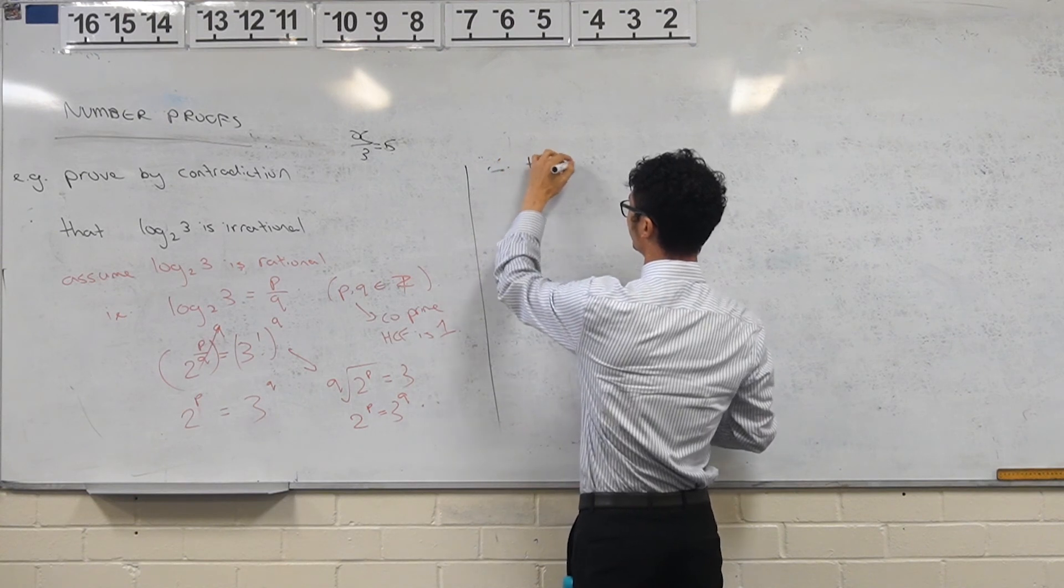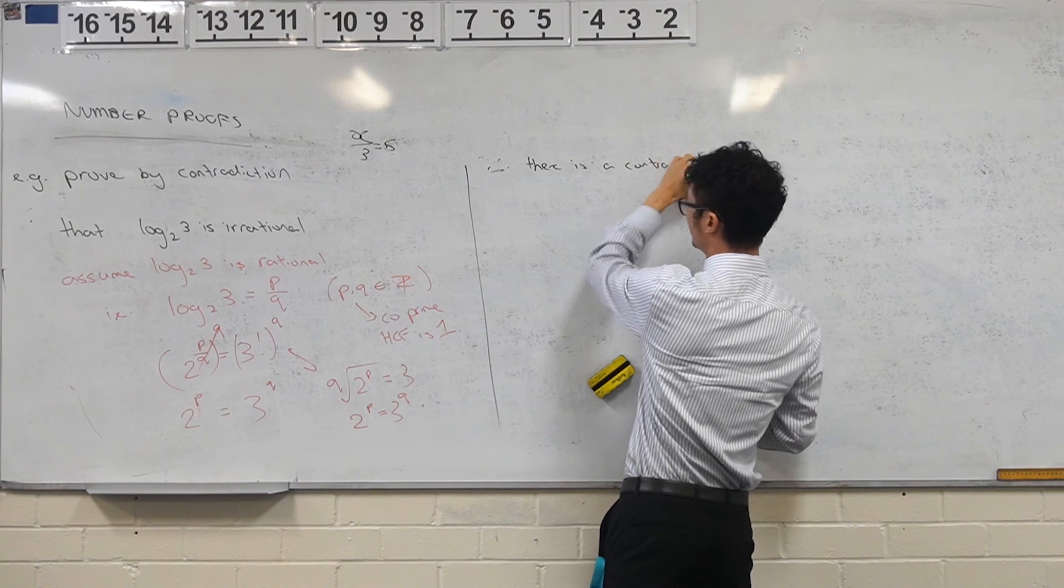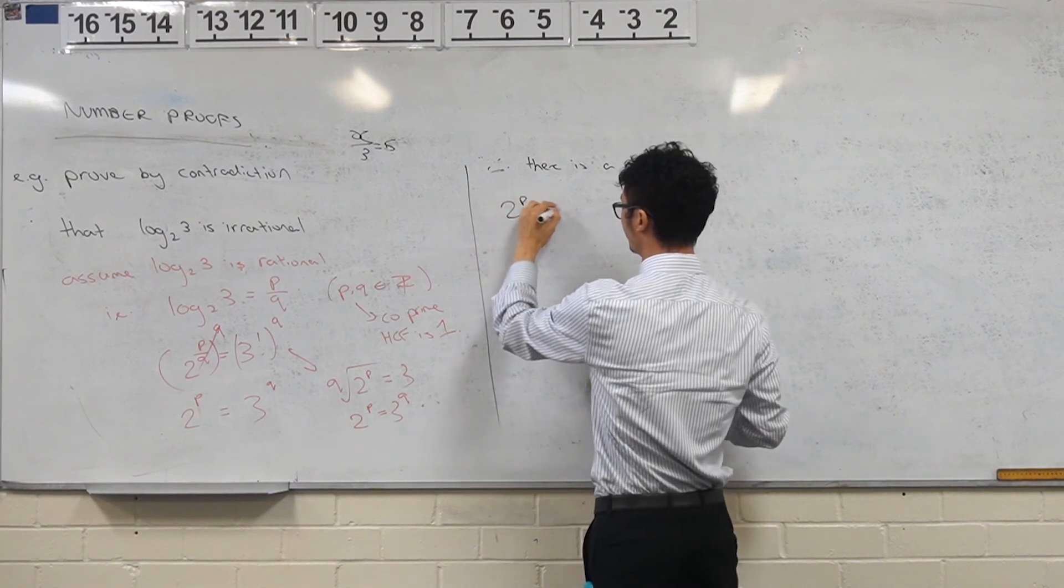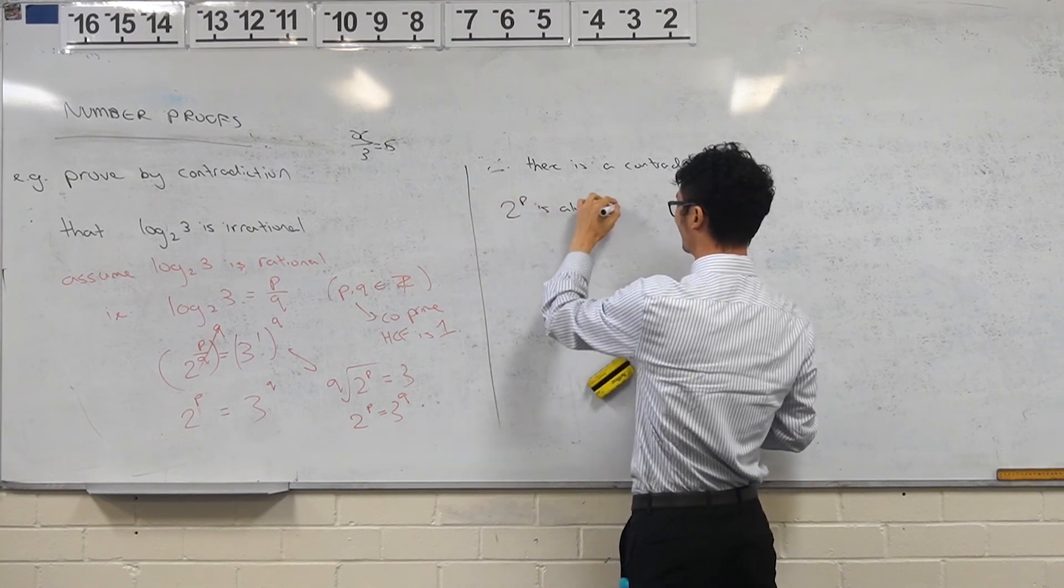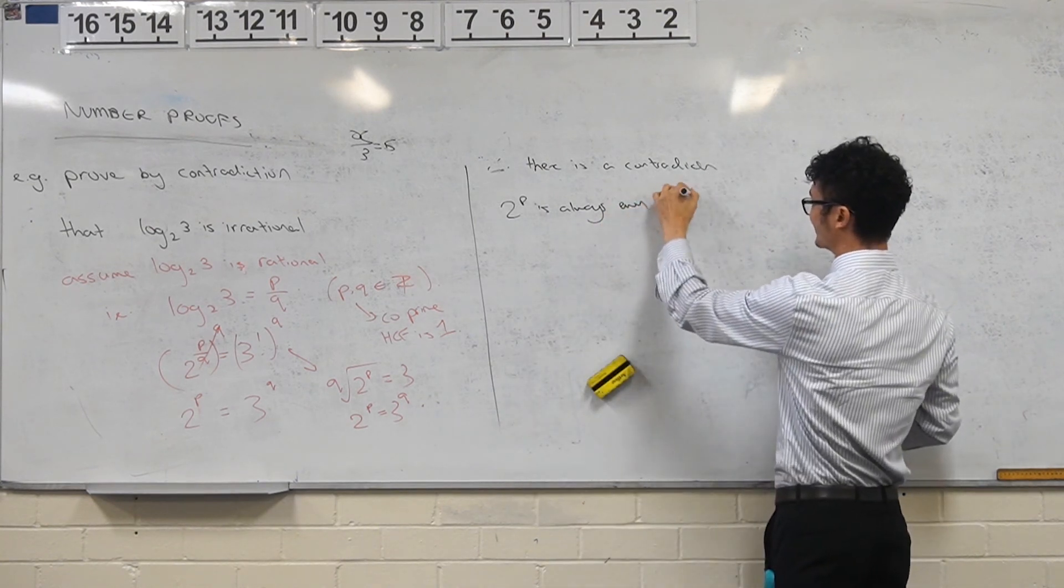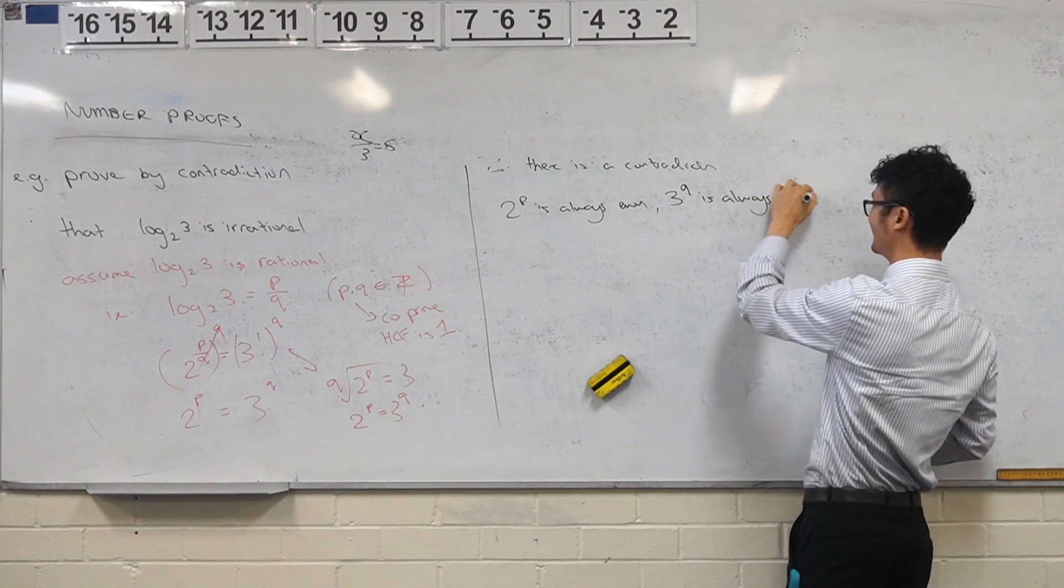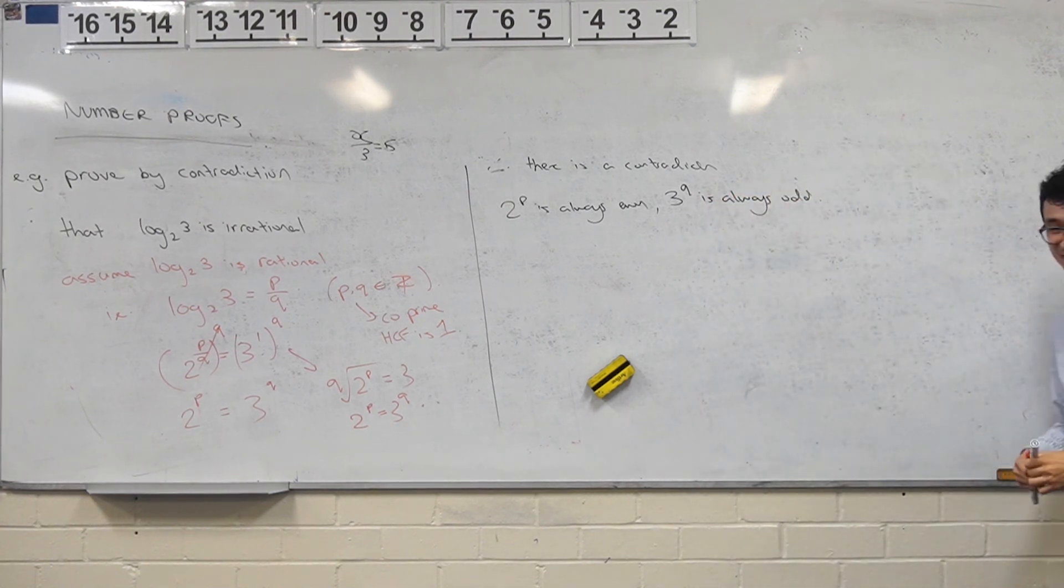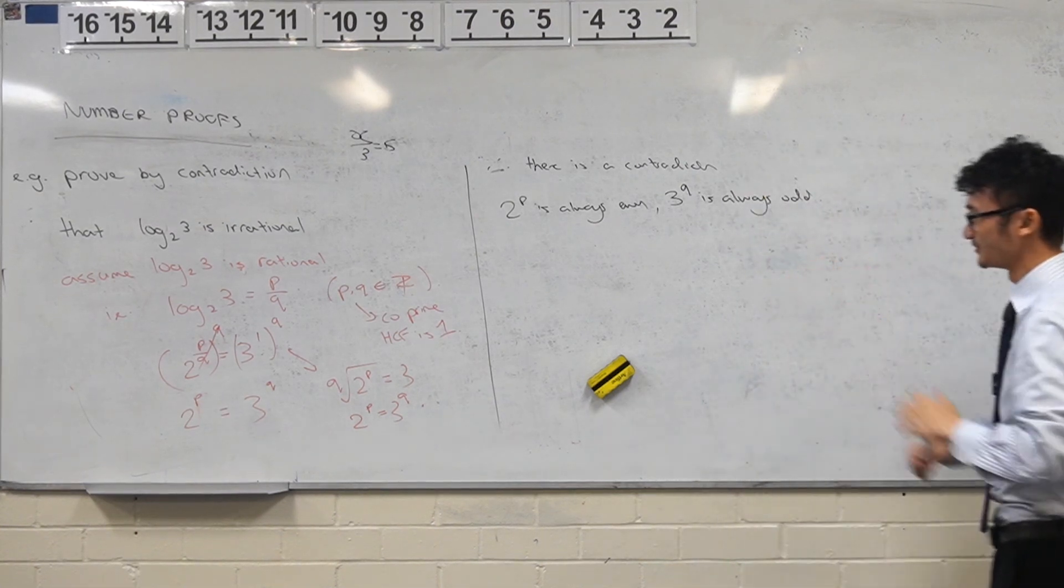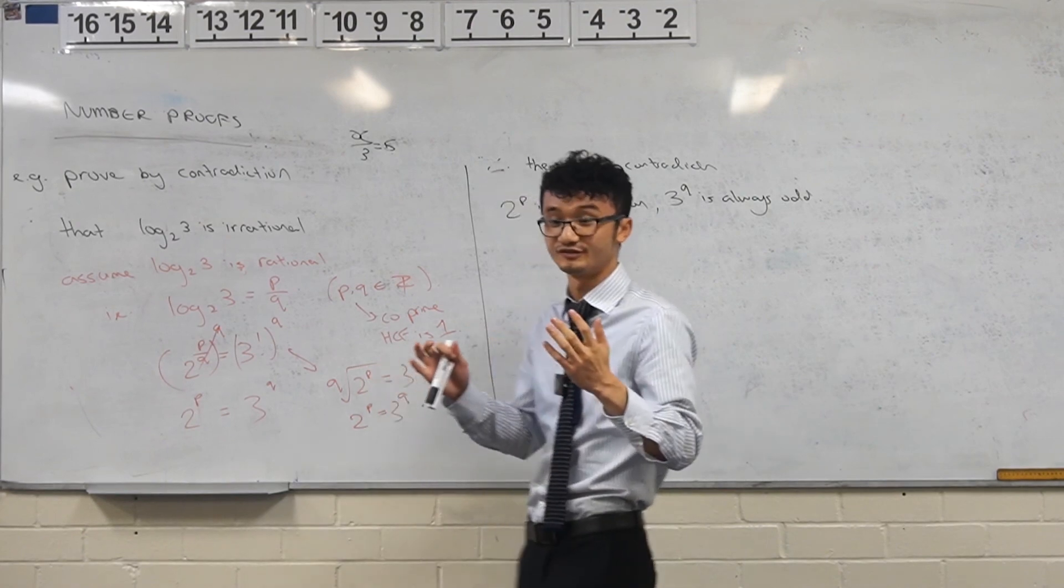Therefore, there is a contradiction. 2 to the power of p is always even. Yeah. And 3 to the power of q is always odd. 2 to the power of p is always even. 3 to the power of q is always odd. And there's a contradiction. Cool. And that's a log proof. That's irrational.